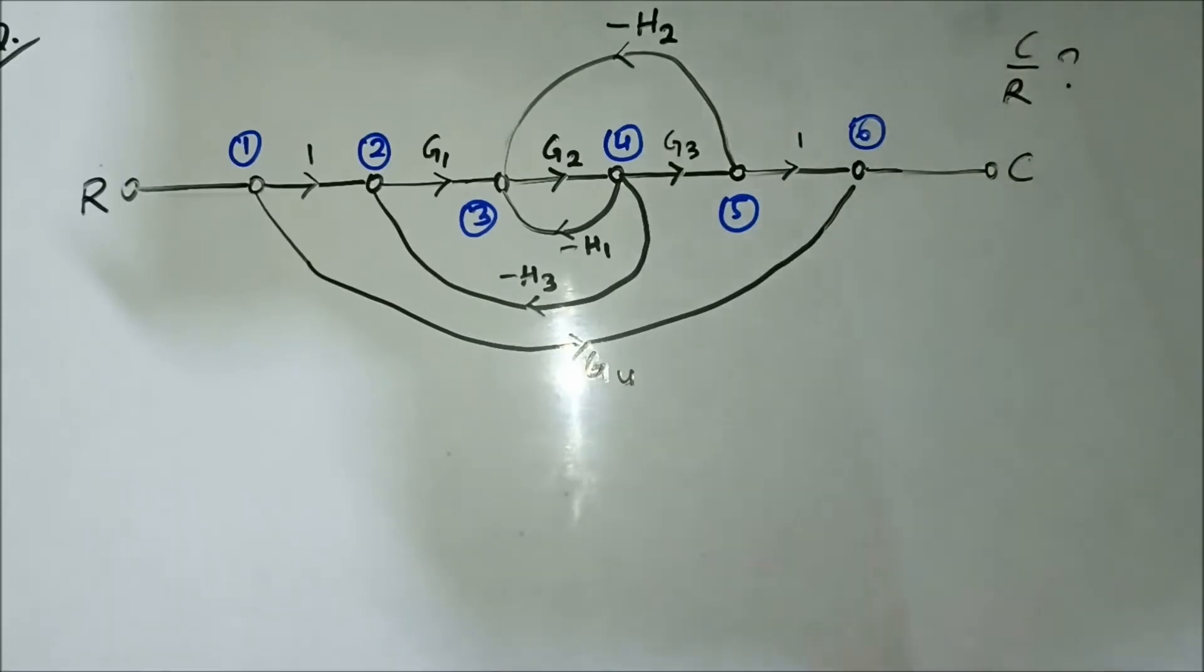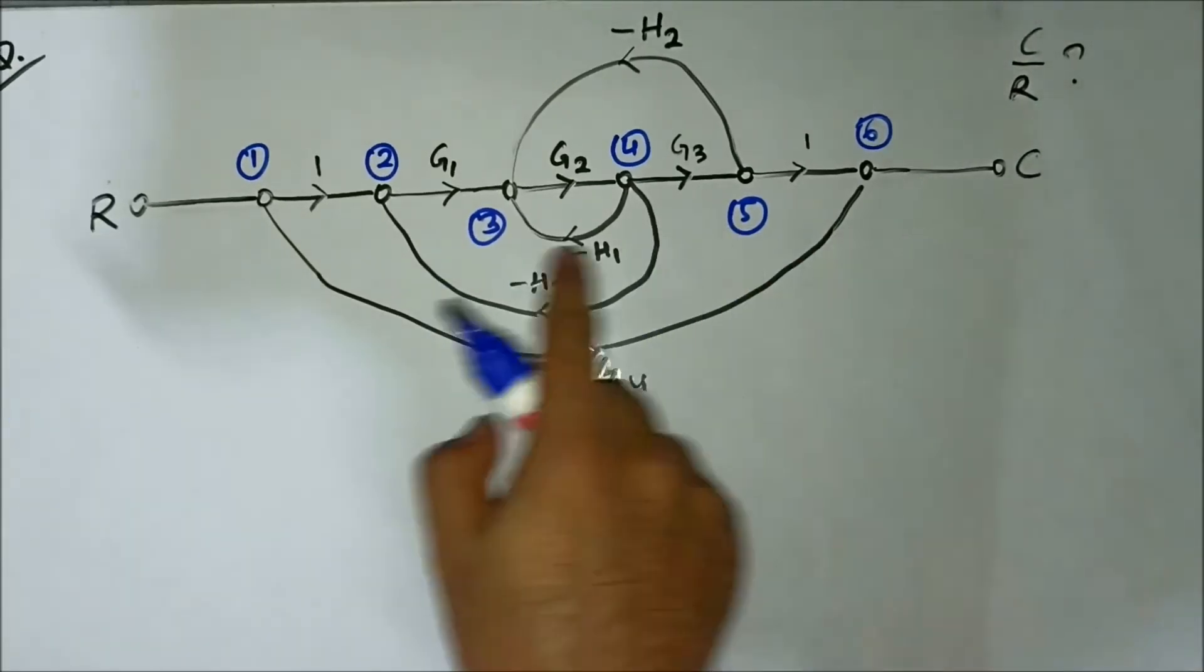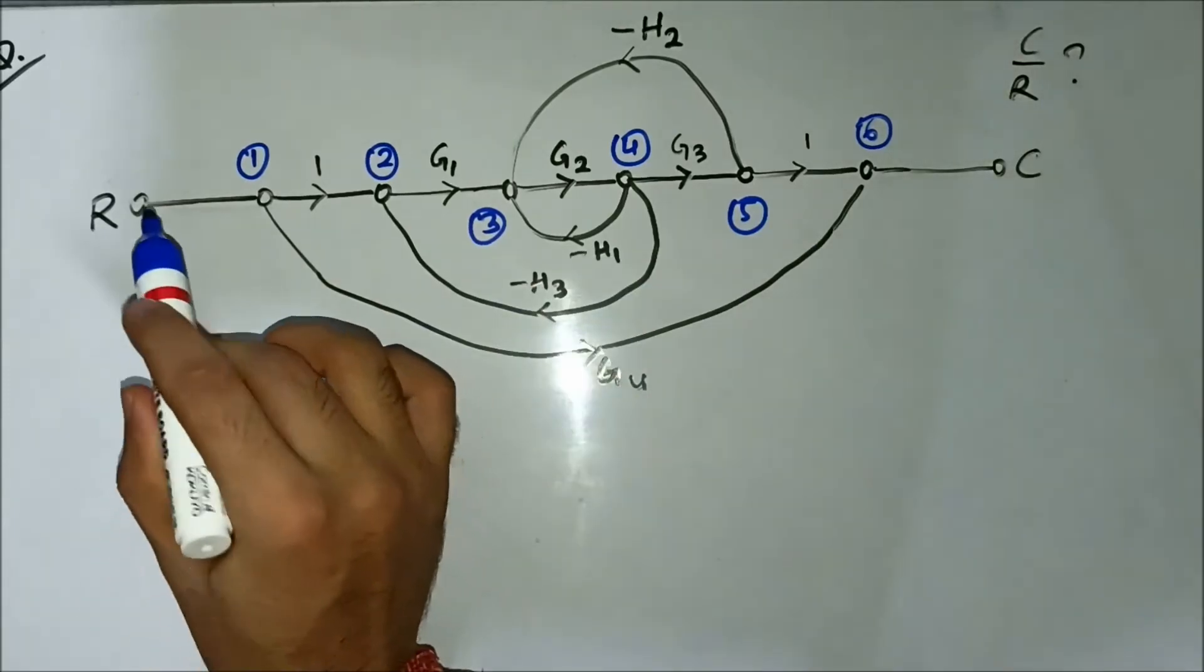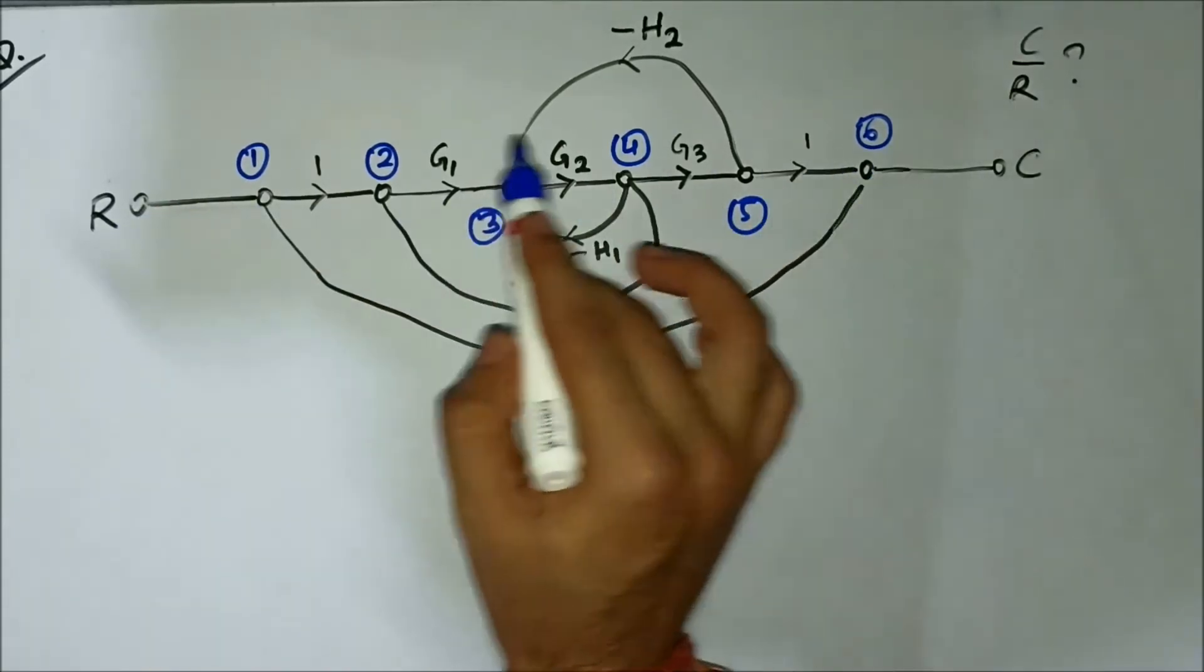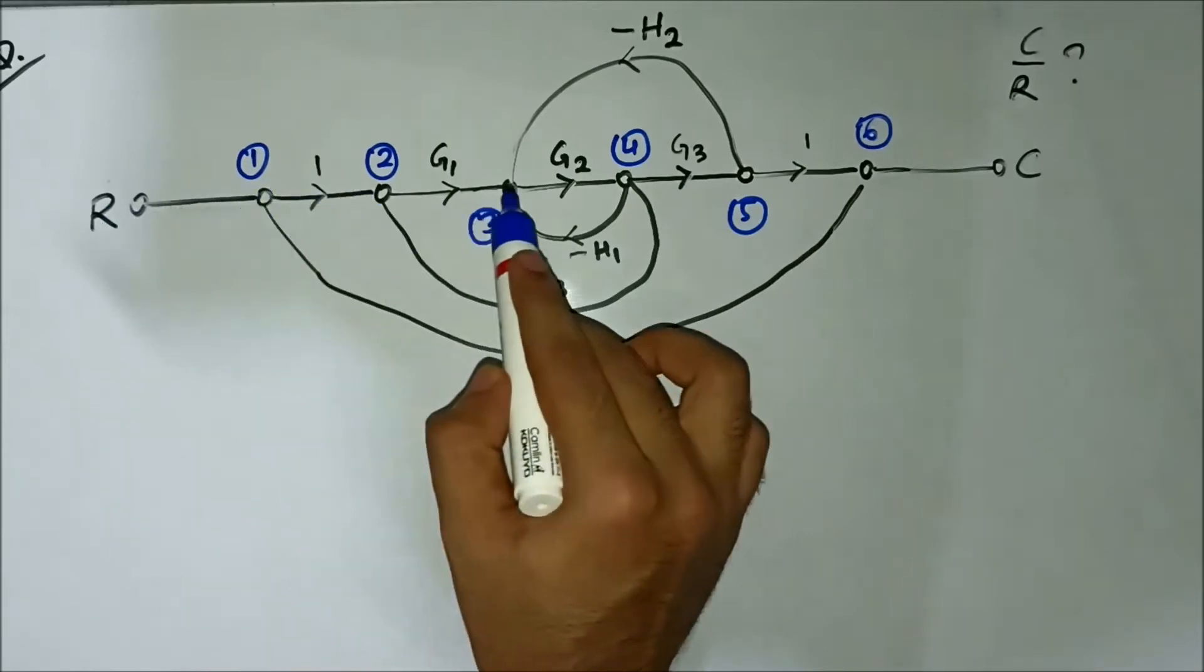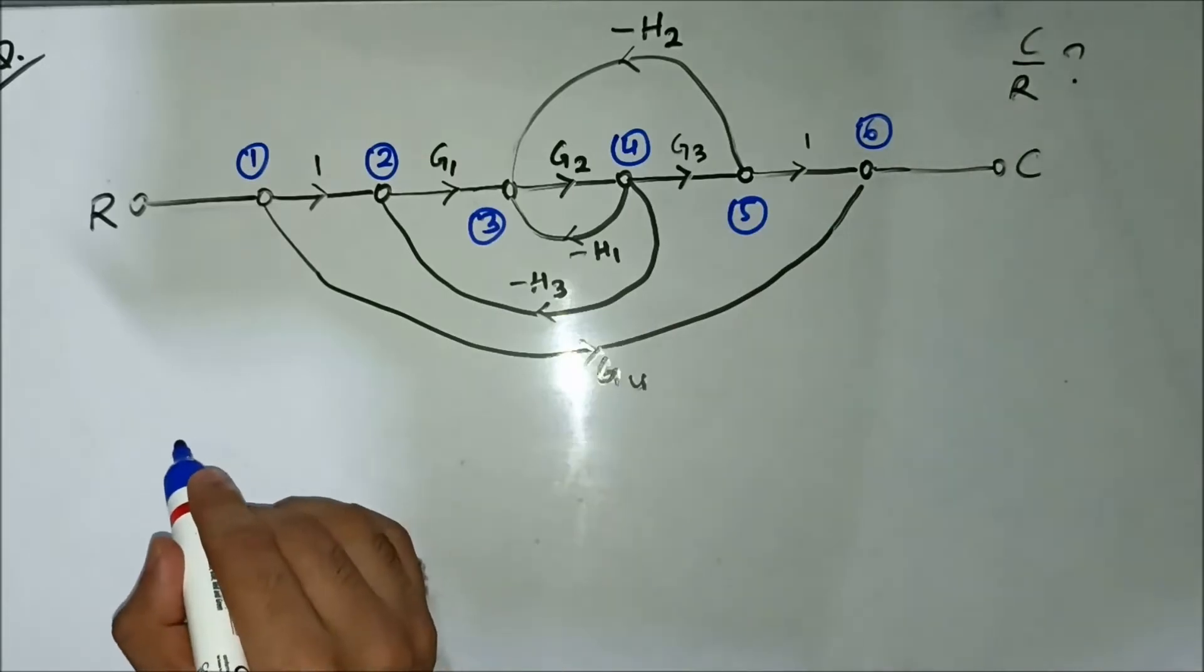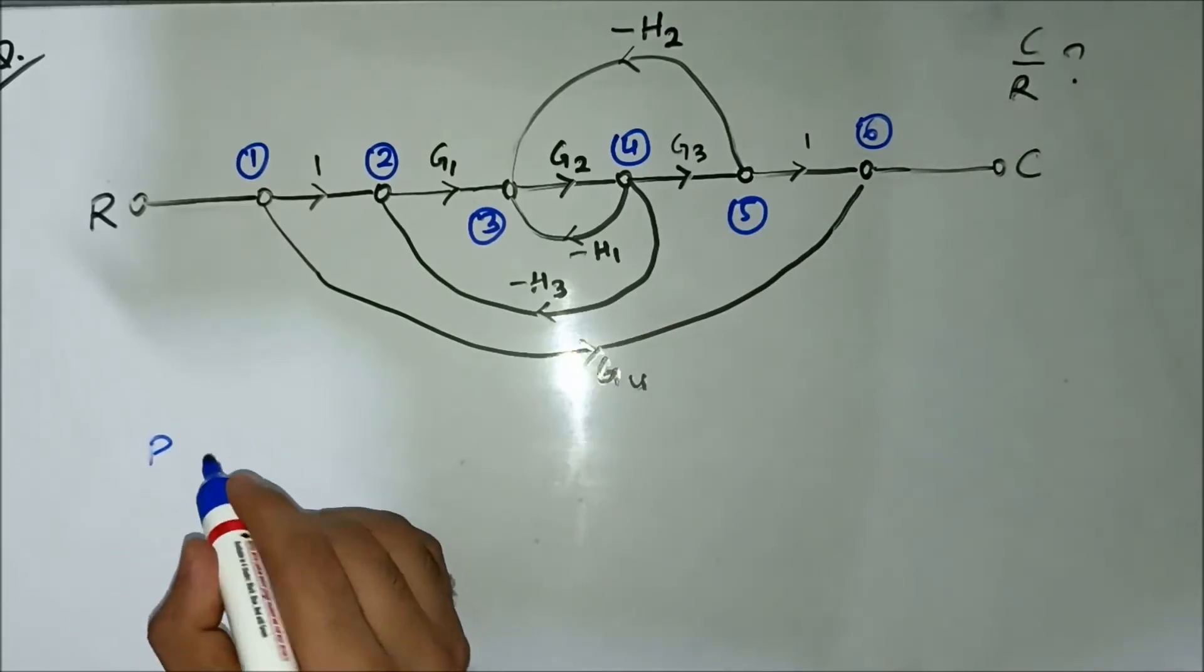First step is identification of the forward paths from the signal flow graph. As you can see here, one of the forward paths is starting from the input side R: 1, 2, 3, 4, 5, 6 up to C. So that is one forward path.